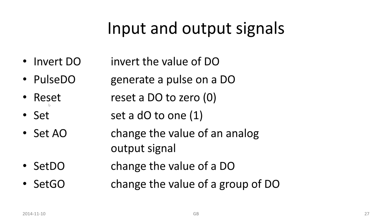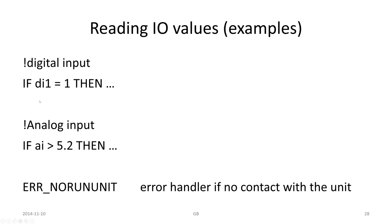Then we have input and output signals. We have InvertDO, digital output, we have input, PulseDO, digital output, reset, set, set analog output, set digital output, or groups of digital outputs. We have some reading IO values. Some examples could be: if digital input 1 equals 1 then, if AI greater than FIRA 2 then. We can have some error handler if no contact with the unit.